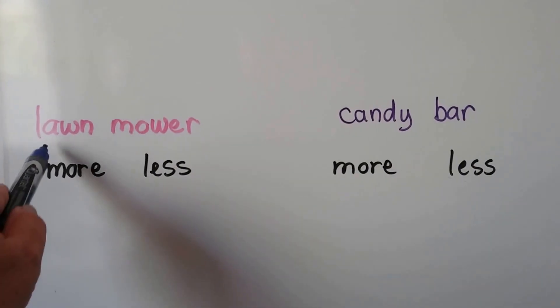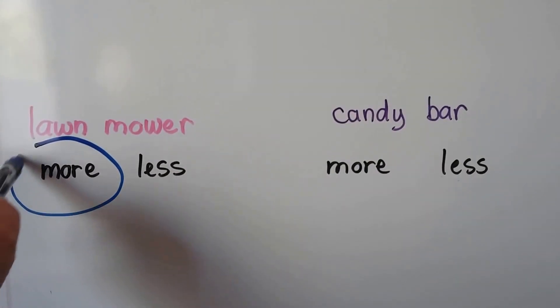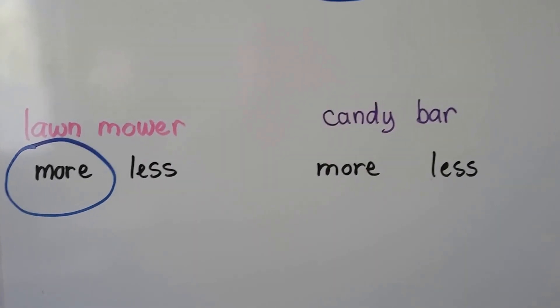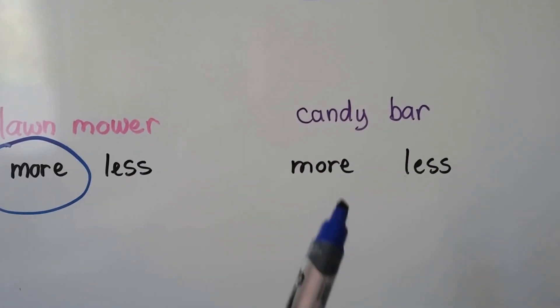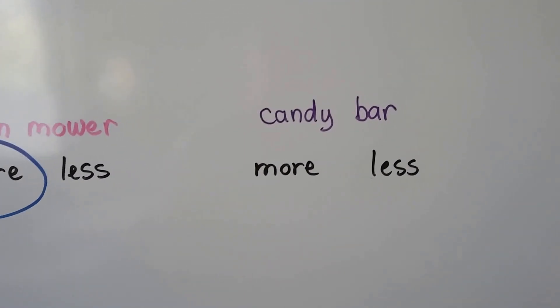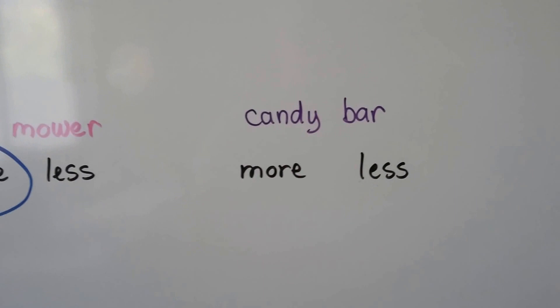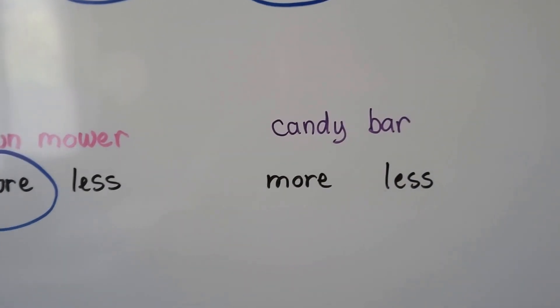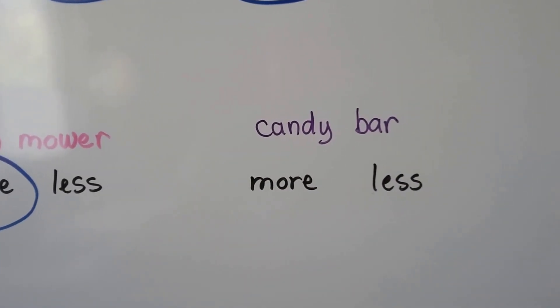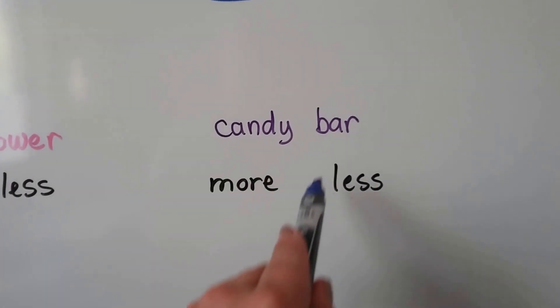Yeah, lawnmowers are pretty heavy. They got the engine and the gas tank and everything. And the blades. How about a candy bar? Do you think a candy bar would be more or less than a pound? And remember that a pound is about four sticks of butter. Well, if you said a candy bar is less, you're right.